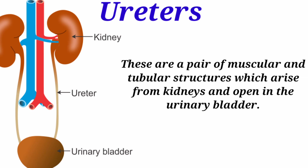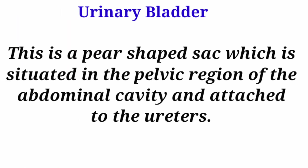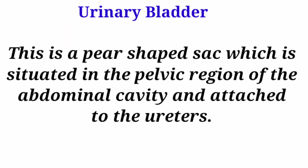The ureters are a pair of muscular and tubular structures which arise from the kidneys and open into the urinary bladder. They drain urine from the kidney to the urinary bladder.